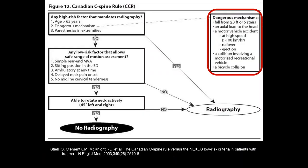Dangerous mechanisms include: falling from more than 3 feet or down 5 stairs, an axial load of the head such as diving into an empty pool, a motor vehicle accident at high speed greater than 100 kilometers per hour with rollover or ejection, a collision involving a motorized recreational vehicle such as a four-wheeler, or a bicycle collision. Any of these are considered dangerous mechanisms and C-spine imaging is mandated.